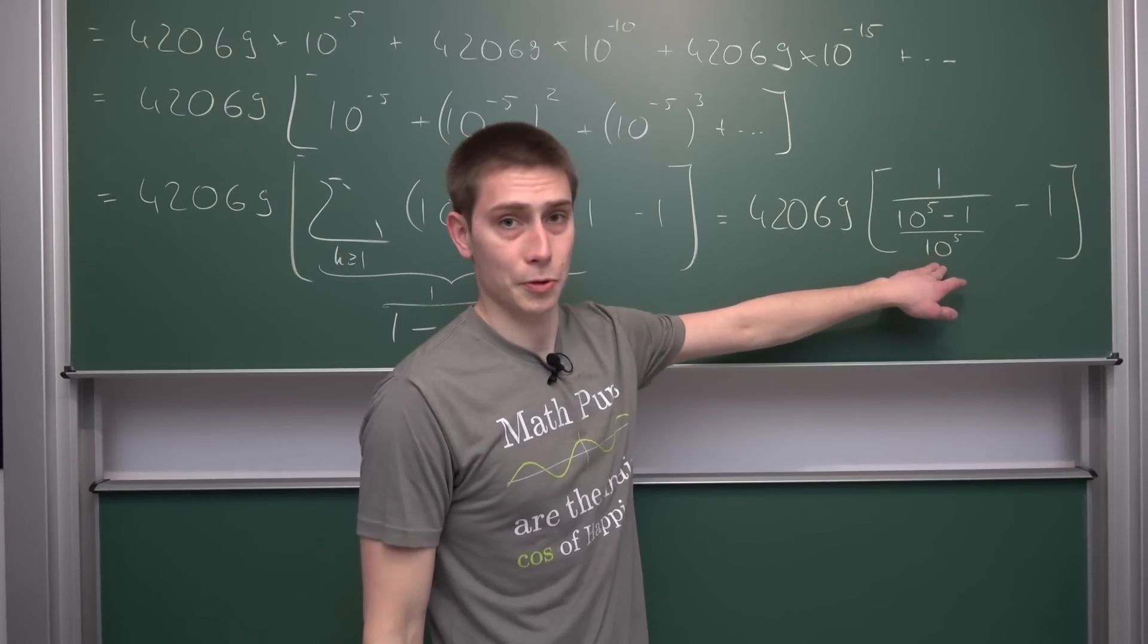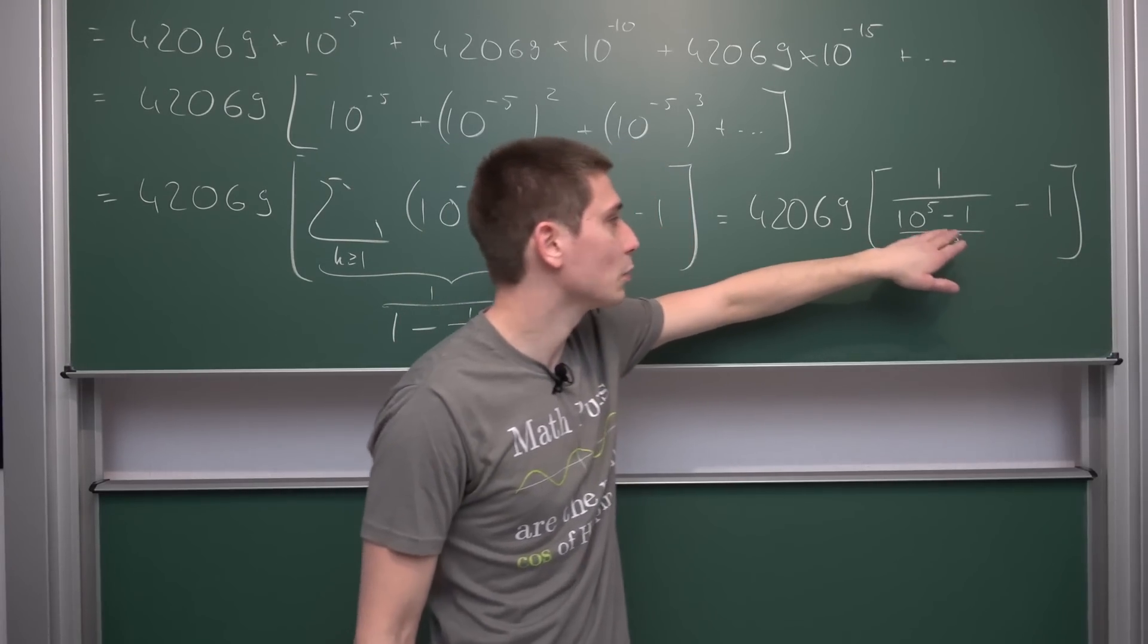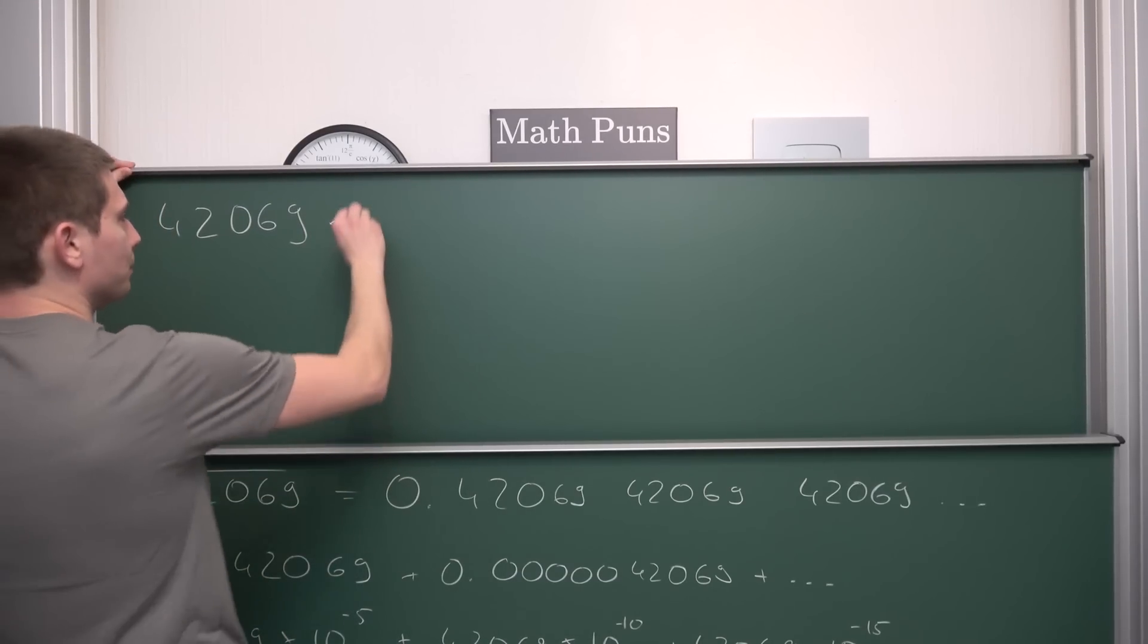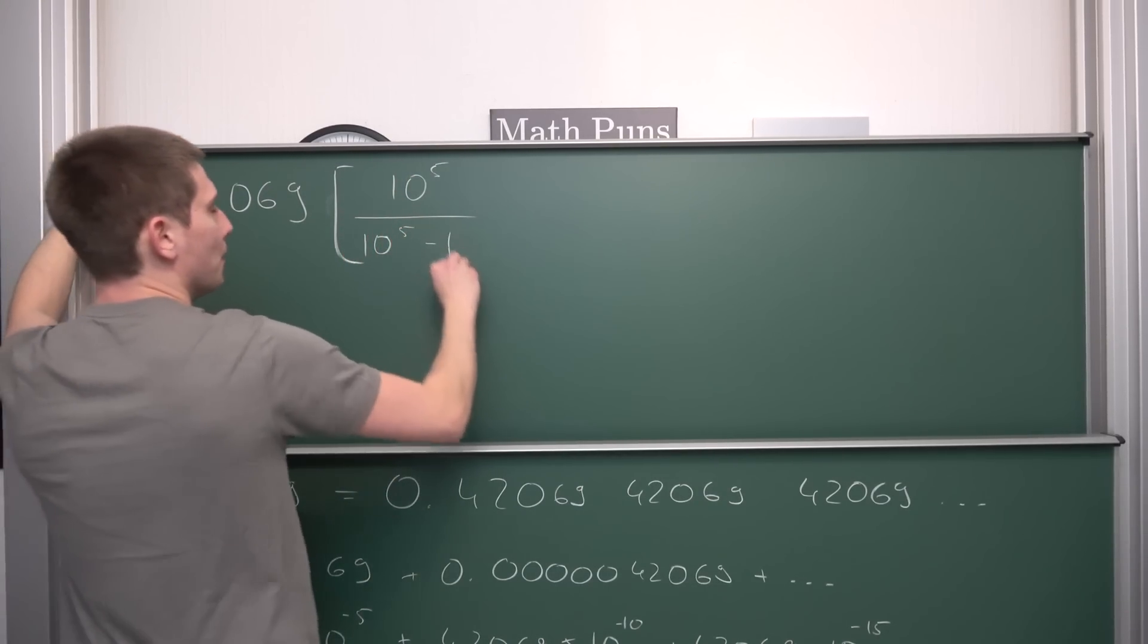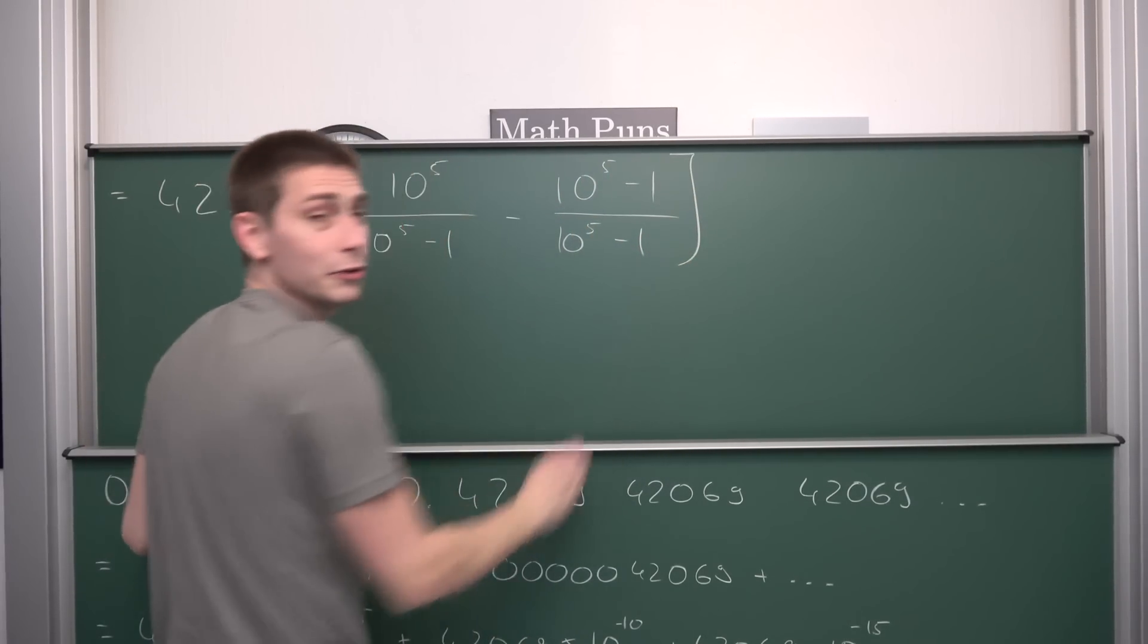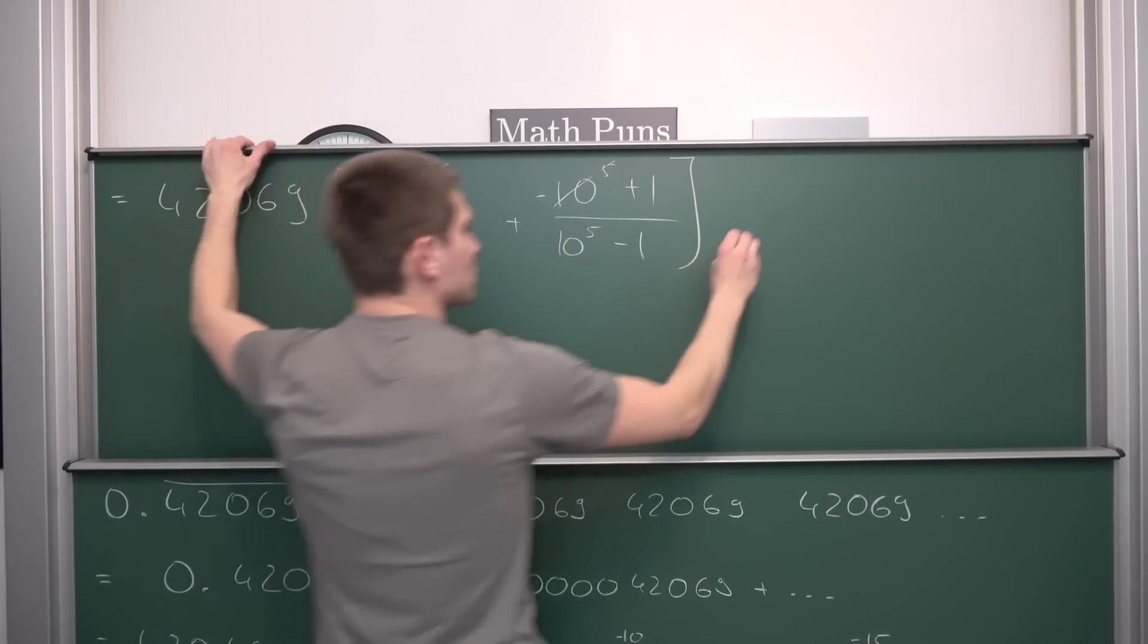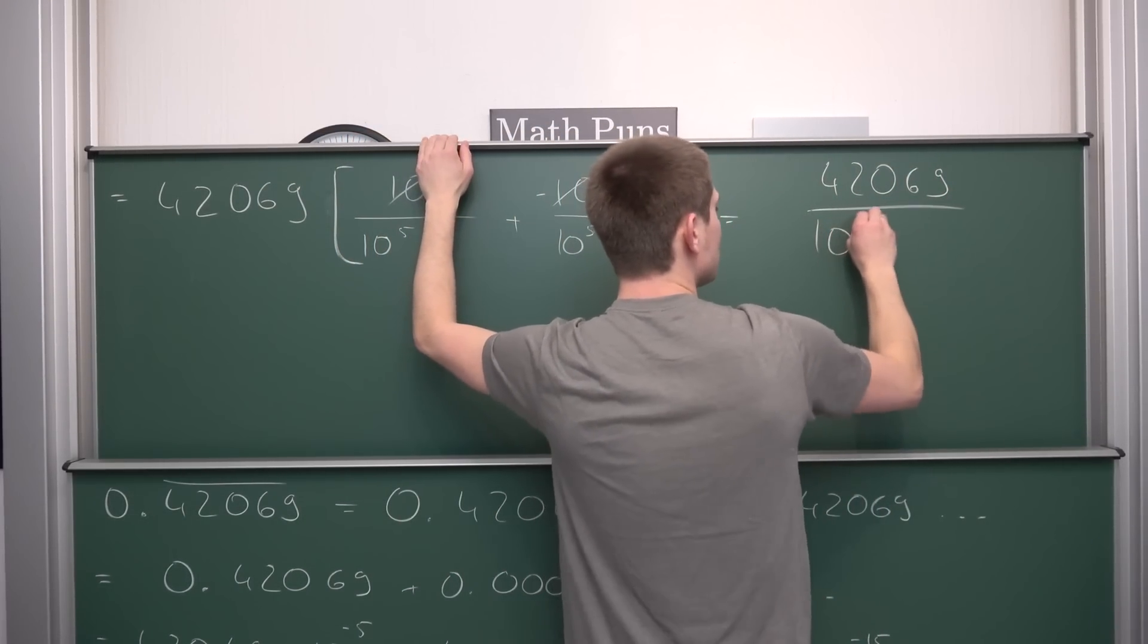We can take the reciprocal here, leaving us with 10 to the 5th power over 10 to the 5th power minus 1, and then we can expand this negative 1 with a common denominator 10 to the 5th power minus 1. So overall, bringing it to a common denominator, we get 10 to the 5th power minus 10 to the 5th power minus 1 over 10 to the 5th power minus 1. The cool thing is the 10 to the 5th power cancels, leaving us with 1 over 10 to the 5th power minus 1. So overall, this gives us 42069 divided by 10 to the 5th power minus 1.